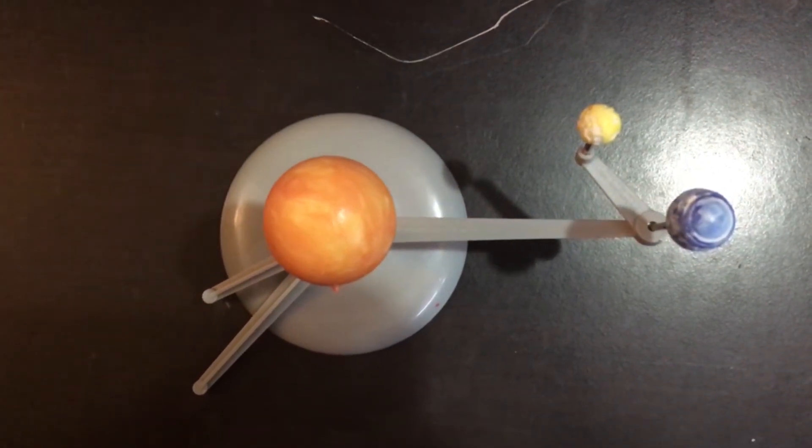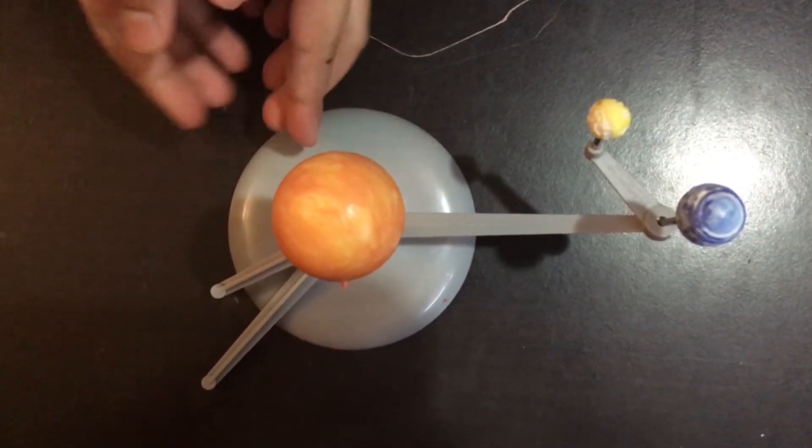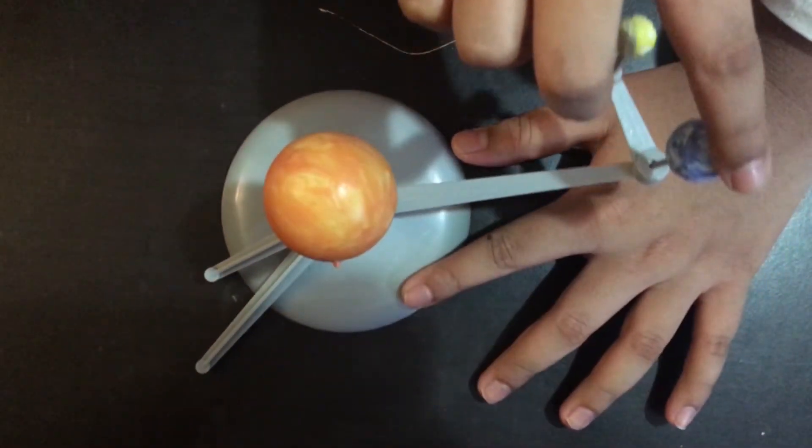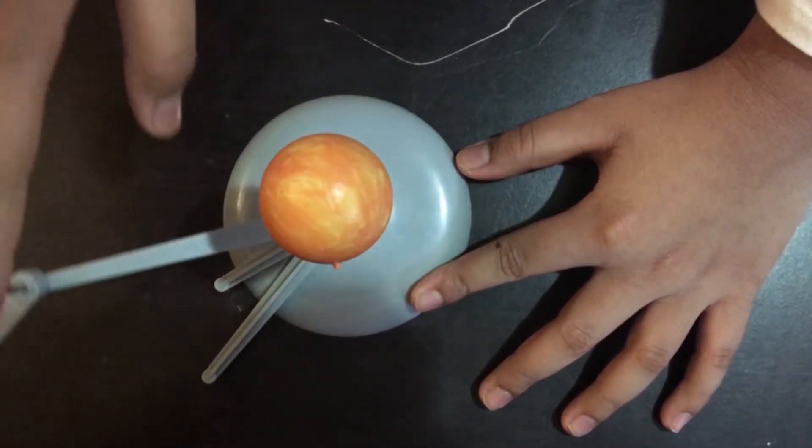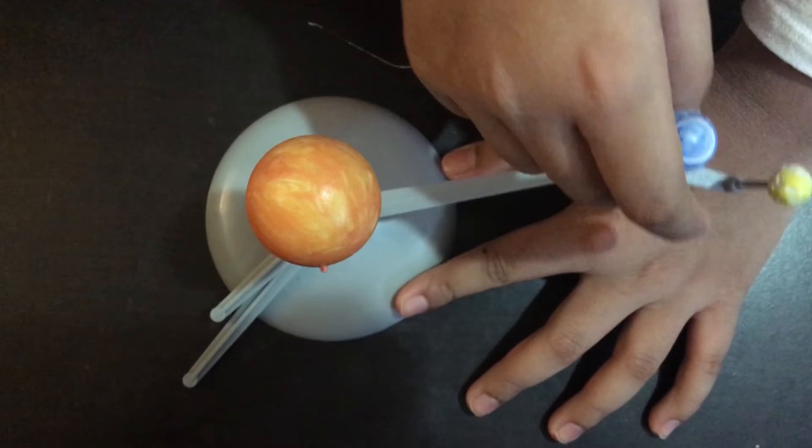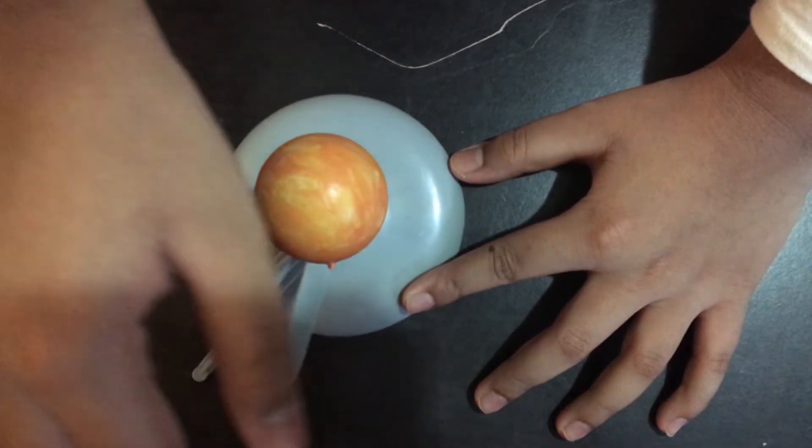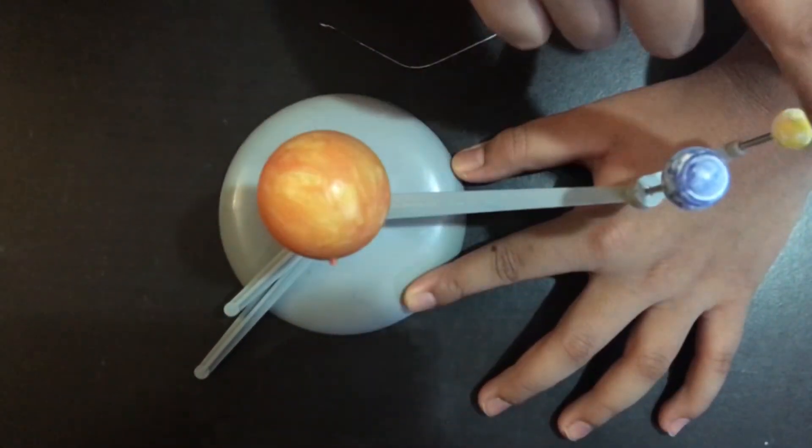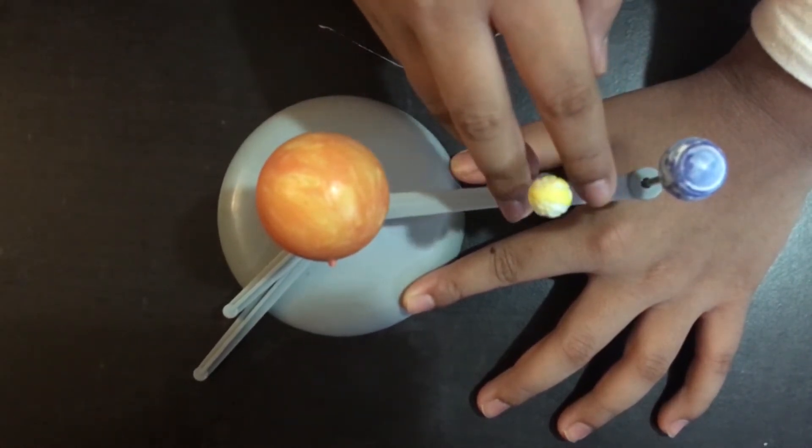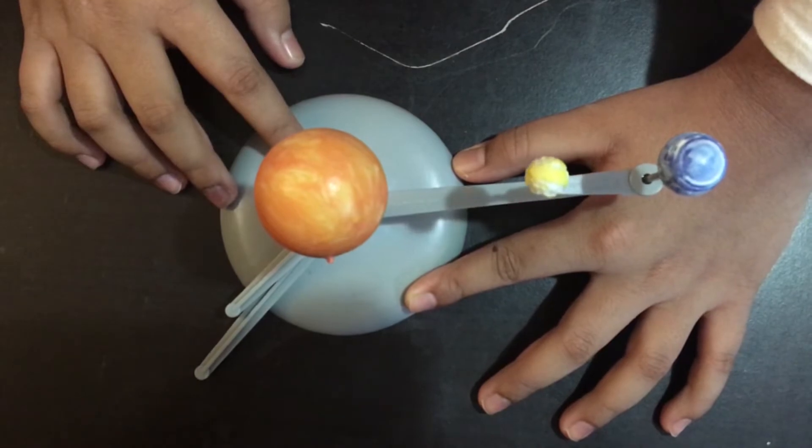Hello guys, today I'm going to tell you how a solar eclipse happens. So the Earth spins the Sun, and then with the Earth, the moon spins the Earth and it also spins the Sun. When the moon comes in between the Earth and the Sun, a solar eclipse happens.